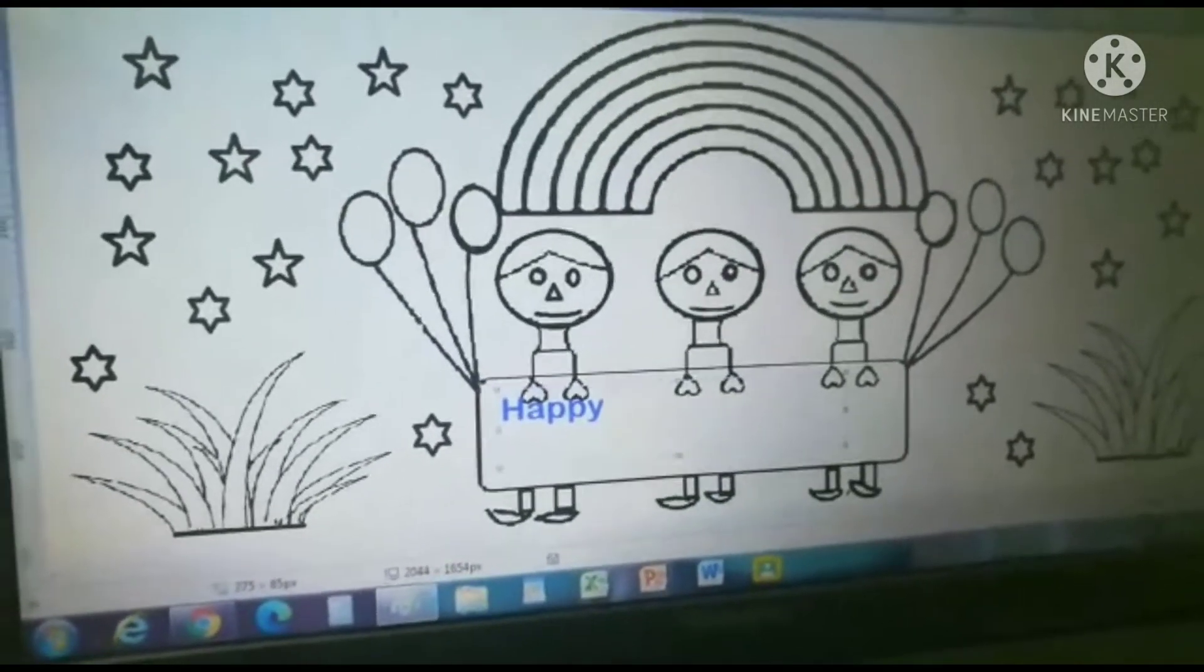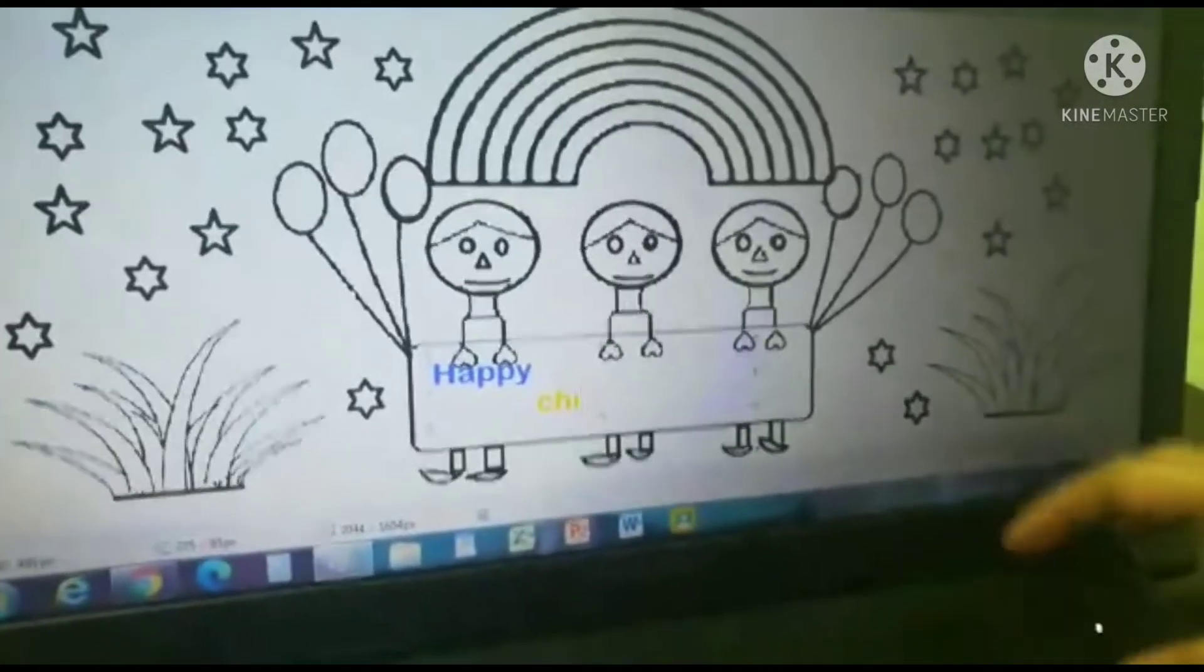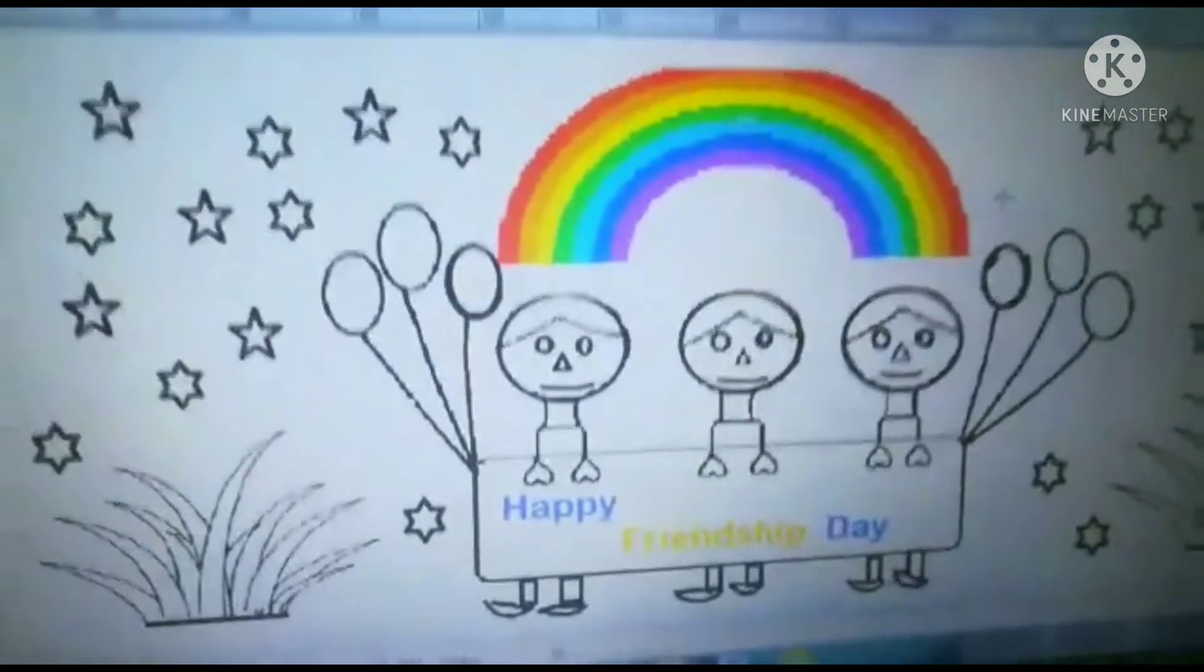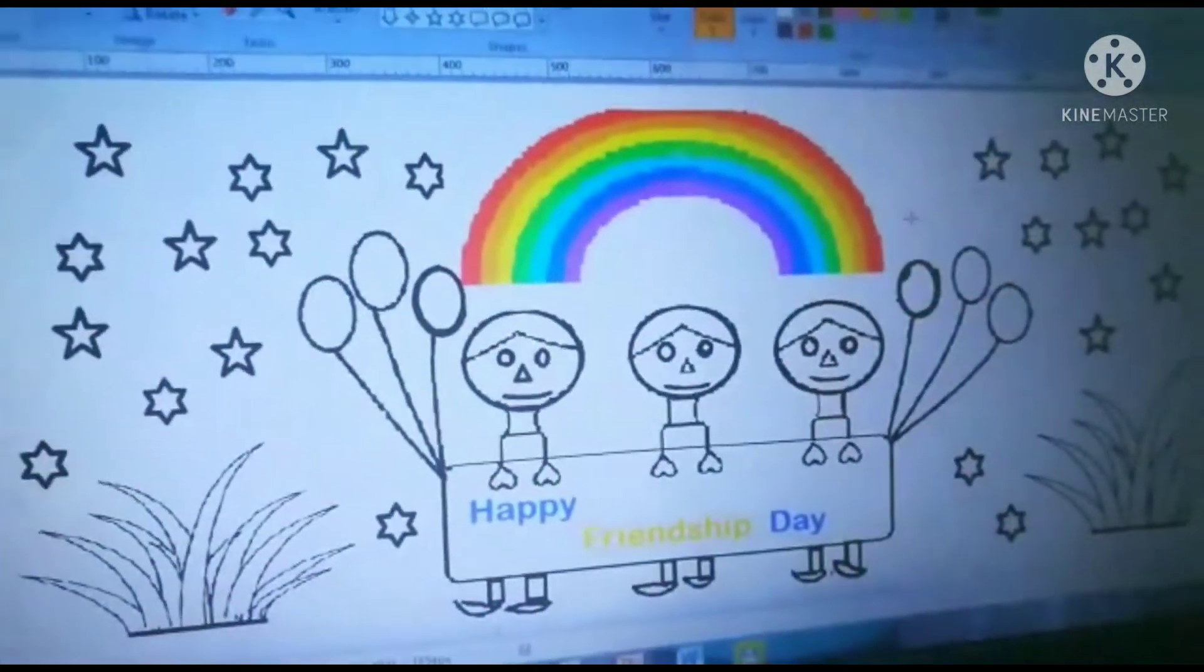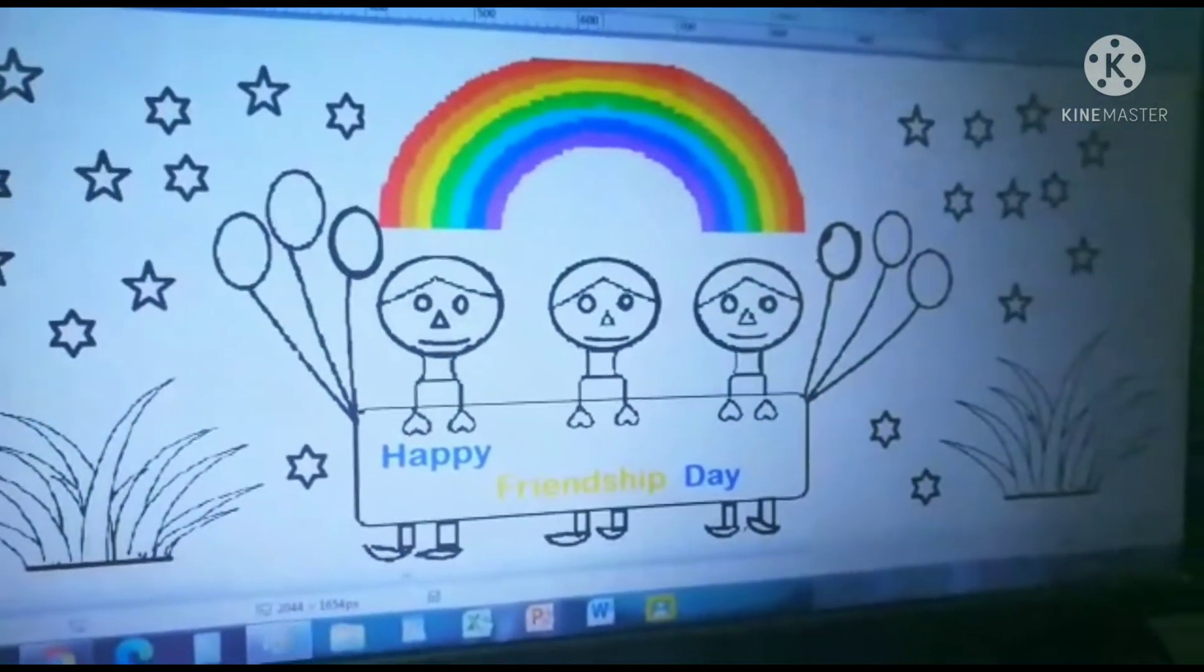Happy, I am keeping orange. For children. Now I am going to, I finished coloring the rainbow. I am going to color everything. Now I took black.